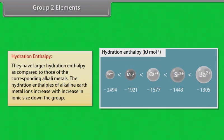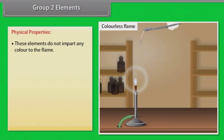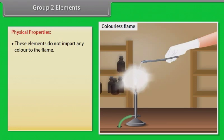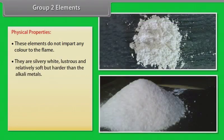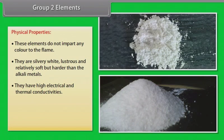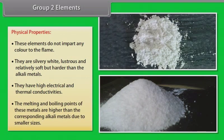The hydration enthalpy of alkaline earth metal ions increases with increase in ionic size down the group. Physical properties: these elements do not impart any color to the flame. They are silvery white, lustrous and relatively soft but harder than the alkali metals. They have high electrical and thermal conductivities. The melting and boiling points of these metals are higher than the corresponding alkali metals, due to their smaller sizes.